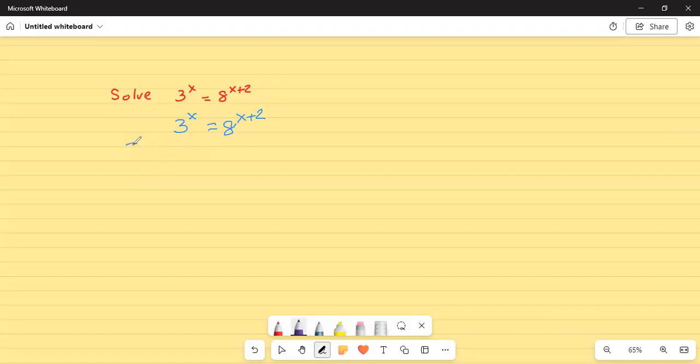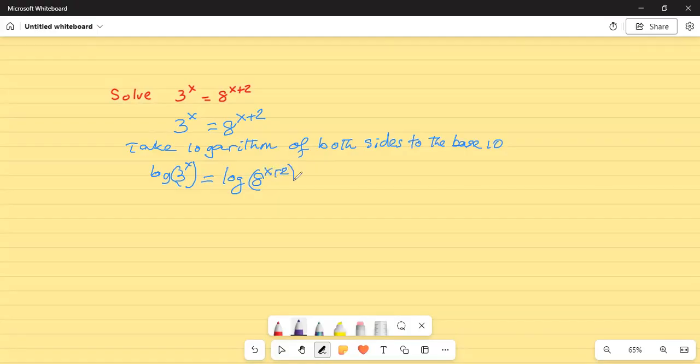That means we write it again 3 to the power of x is equal to 8 to the power of x plus 2. Then we will take logarithm on both sides to the base 10. Logarithm of 3 exponent x is equal to logarithm of 8 exponent x plus 2. Now, we will use a property of logarithm which is an exponent by a factor that comes in the front as a coefficient.